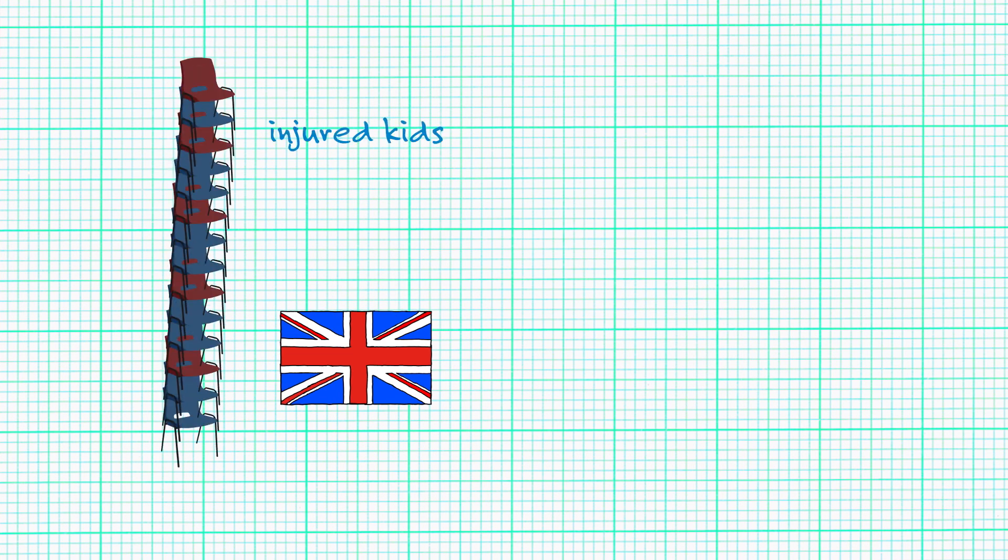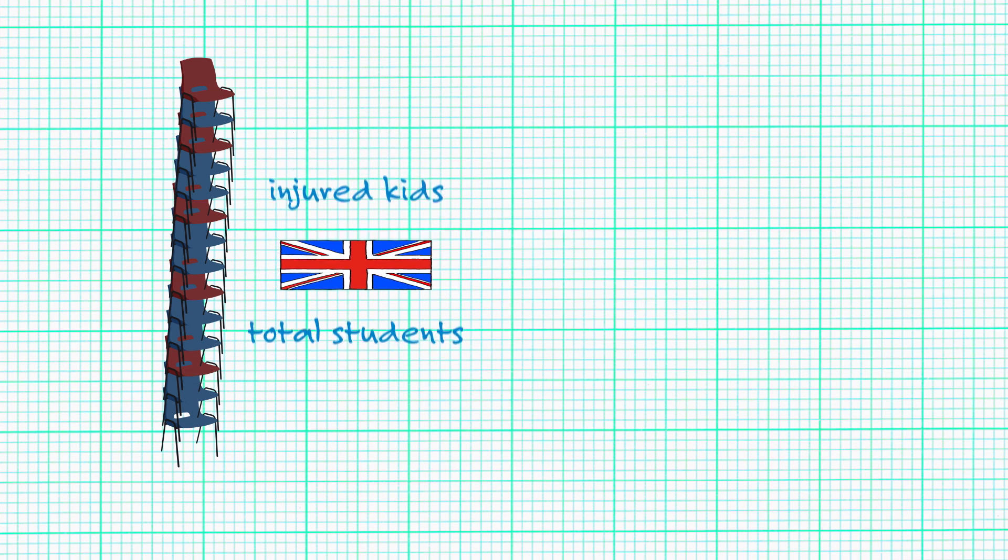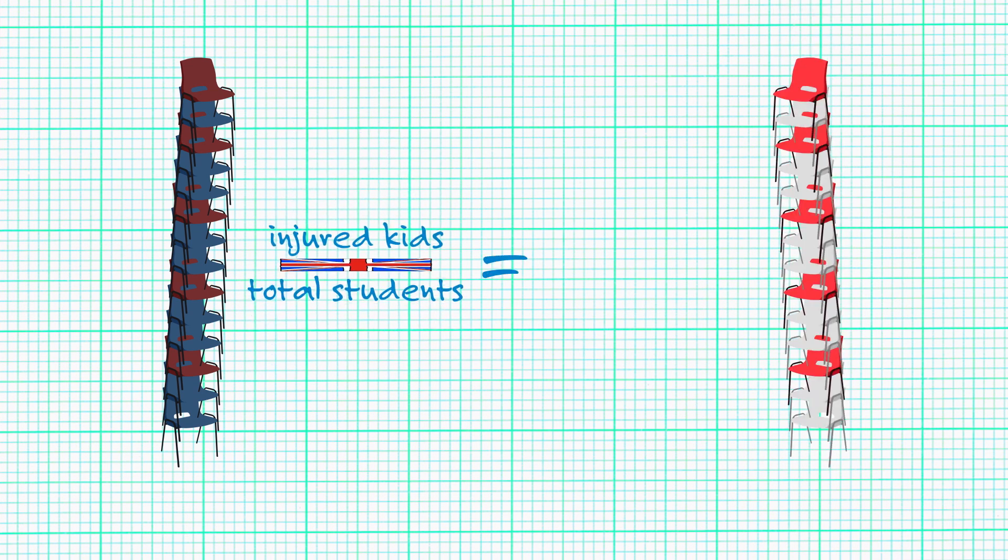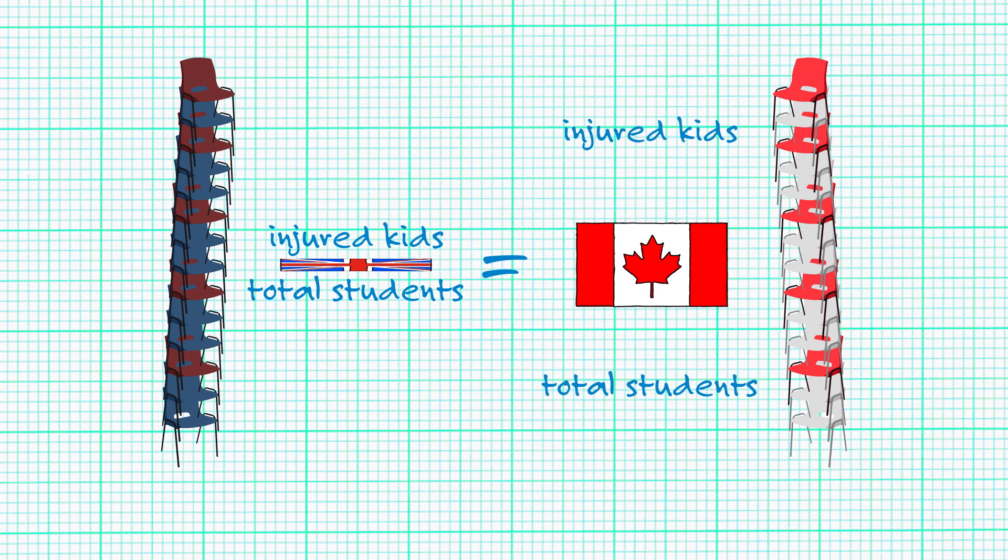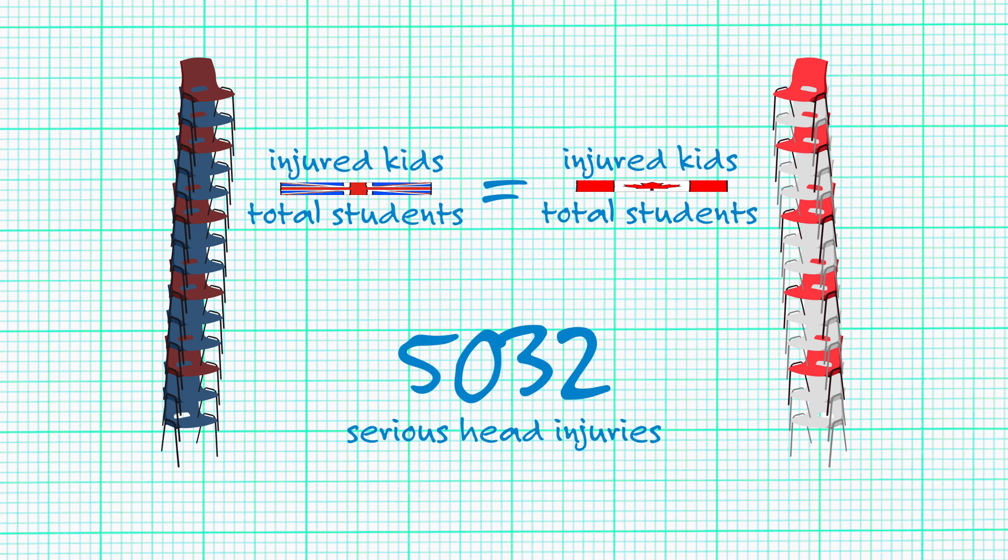There was only one study on kids falling back on their chairs, and it was approximately 5,000 kids in Britain. So we took the kids in Britain who were injured by falling back on chairs, calculated how many students in school are in Britain, we ratioed that out, and then applied the ratio to students in Canada. That's where we got 5,032 serious head injuries in Canada each year.